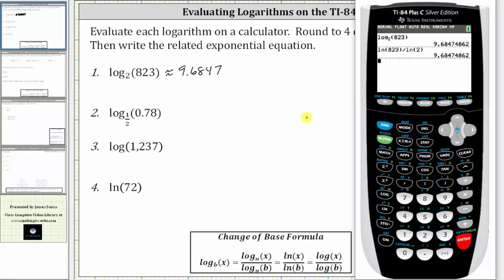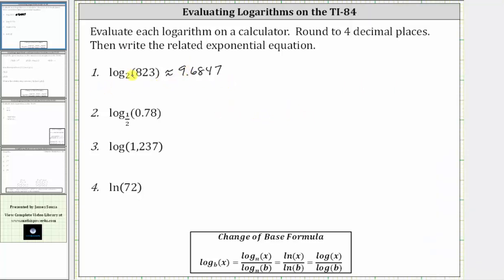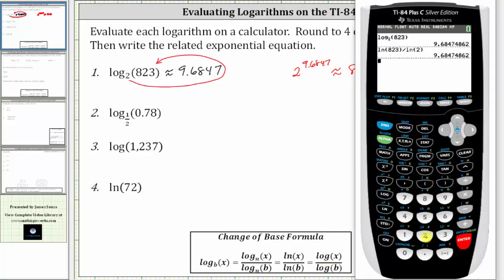Now for the exponential equation, remember a logarithm is an exponent. The related exponential equation is two raised to the power of 9.6847 is approximately 823. Let's verify this. Notice how we do have approximately 823. It's a little less because we did round down.